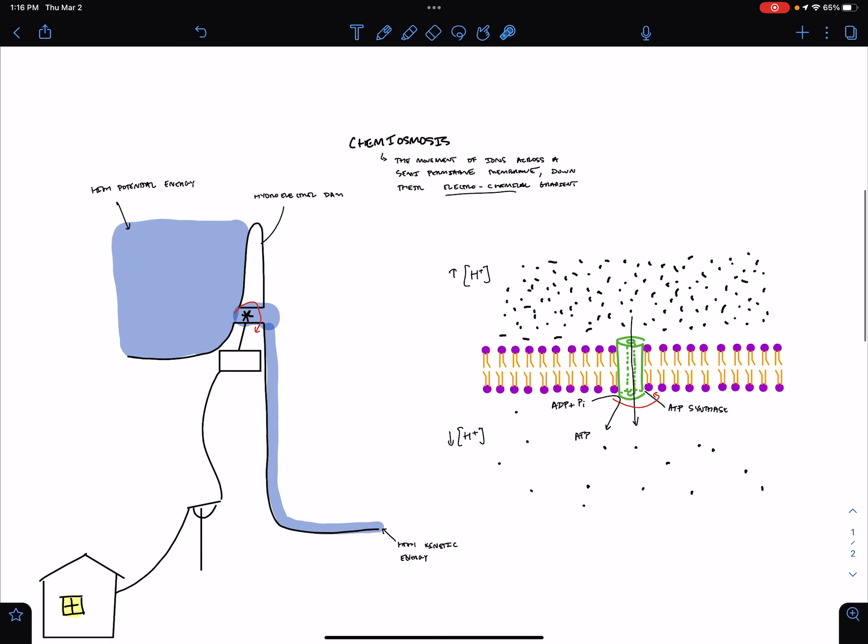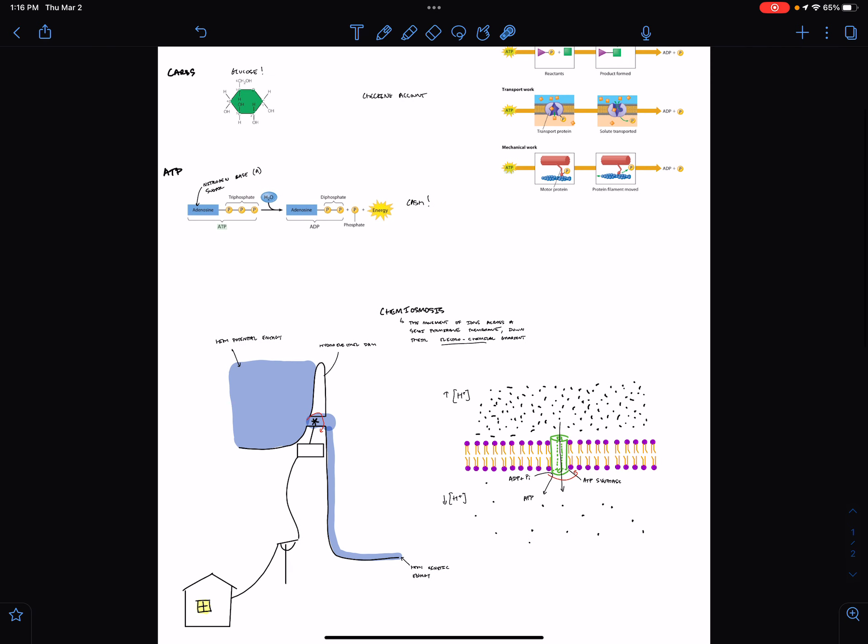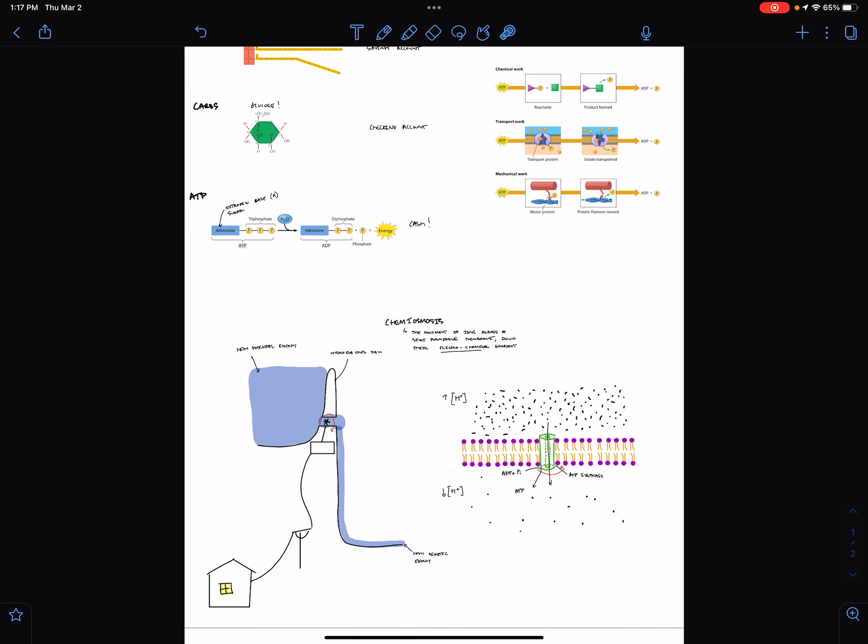This idea of an electrochemical gradient powering a set of reactions in both cellular respiration and photosynthesis is going to come back up again. If you're confused about what's happening here and how it's similar to the dam analogy, let's talk about it in class on Monday or Tuesday, depending on when your class is.